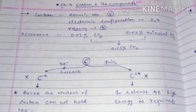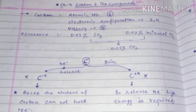Hello students. In this video we will discuss chapter number four, that is Carbon and its Compounds. As you know, carbon has the atomic number six, and we can write the electronic configuration of carbon as two and four.